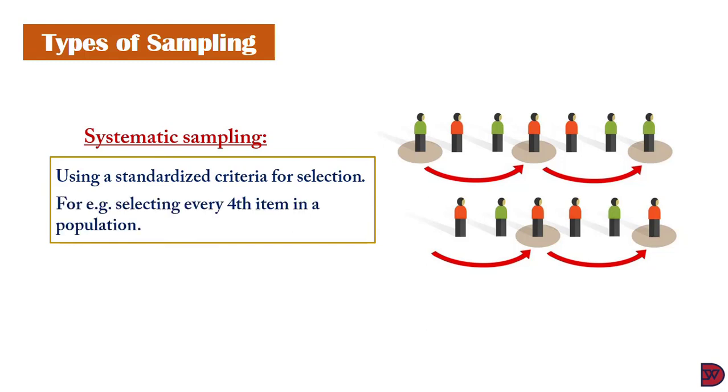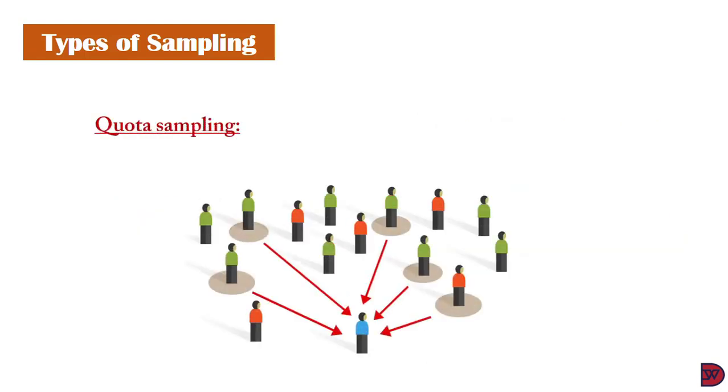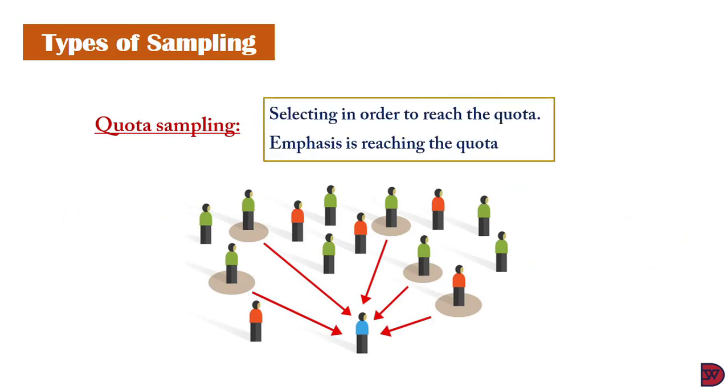Lastly, quota sampling. This selection is done by volunteerism up until the required quota for the sample is gotten. For example, 10 people being asked to step out or volunteer for a certain project. Anybody that comes out is chosen and used for that purpose.